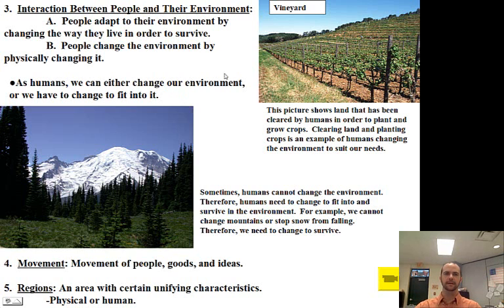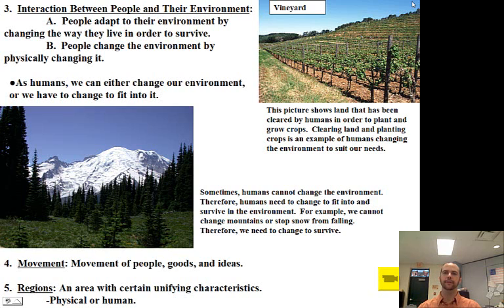Up on the top right, you see that people can change the environment to survive by actually physically changing it. A vineyard is a place where you grow grapes. This hill wasn't perfectly flat and smooth — it probably had rocks all over it, trees at one point. But human beings can remove trees, flatten areas, grade the land, make it smooth, and then plant a vineyard. After we clear the land and plant, we can take the harvest. That's how humans can change their environment by physically changing it — we interact with the environment by physically changing it to survive.